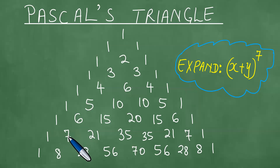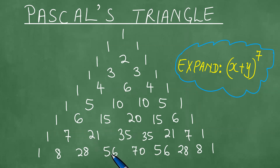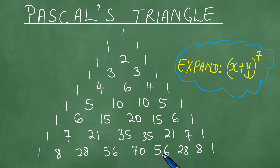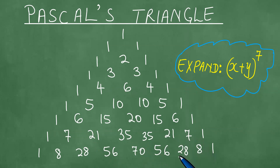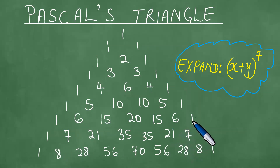Next row: 1 plus 7 is 8, 7 plus 21 is 28, 21 plus 35 is 56, 35 plus 35 is 70, 35 plus 21 is 56, 21 plus 7 is 28, 7 plus 1 is 8 — put 1s on the sides. And this here is called Pascal's Triangle.